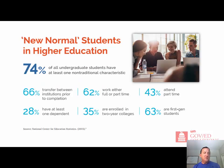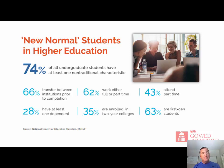This different mix of students has created what we now call the 'new normal' for higher education. 74% of all undergraduate students have at least one non-traditional characteristic. For example, almost 28% have at least one dependent — that wasn't the case 20 years ago. Having a dependent means students need more convenient and personalized ways to learn. So you've got this combination of digital native students expecting digital curriculum, plus new normal students who are forced into digital learning to accommodate their different life circumstances.